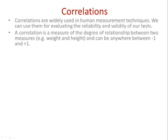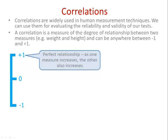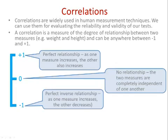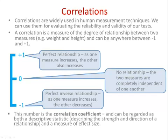The correlation itself is usually denoted by a number that can be anywhere from minus one to plus one. A plus one is a perfect positive relationship, where as one variable increases the other also increases. A zero correlation means the two variables have no relationship or association whatsoever. A minus one correlation is a perfect inverse relationship — as one variable goes up, the other goes down. The actual number is called the correlation coefficient, and you can think of it as a descriptive statistic like a mean, telling you the strength and direction of the relationship.